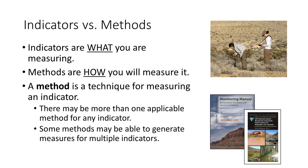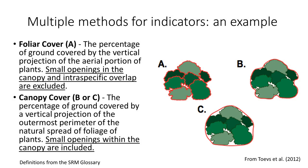For example, we can measure cover using point-intercept methods along continuous transects or within plot frames. Also, some methods may be able to generate measures for multiple indicators—a good example is the line point-intercept method, which records data that can be used to calculate numerous cover and species composition indicators. The indicator of shrub cover can be measured with any vegetation cover method, including line point-intercept, continuous line intercept, point frames, or ocular estimates. While each measures cover, they differ in how they define that indicator, which can lead to inconsistencies or incompatibility of data.